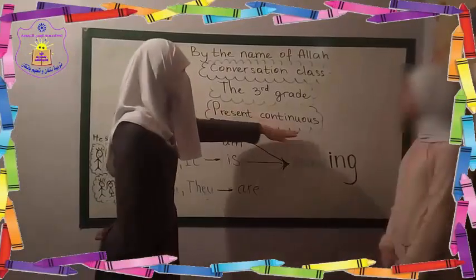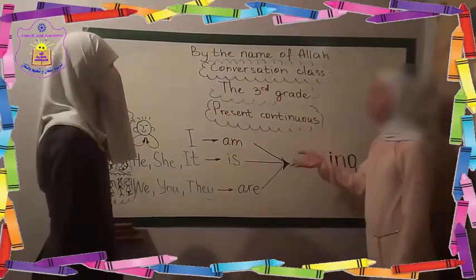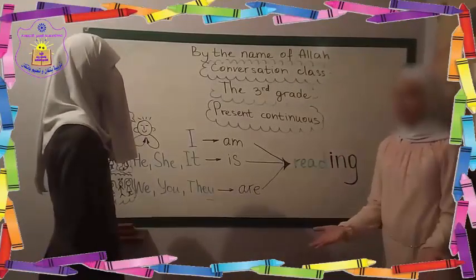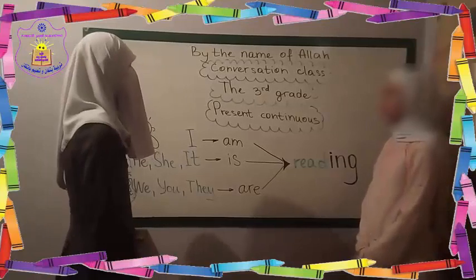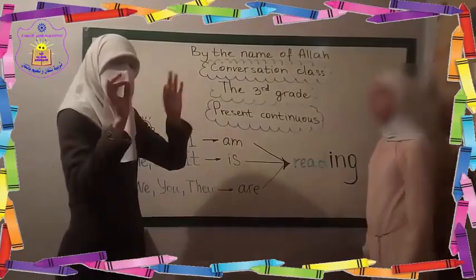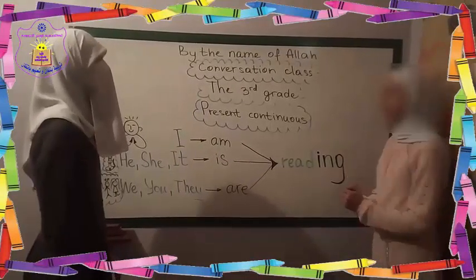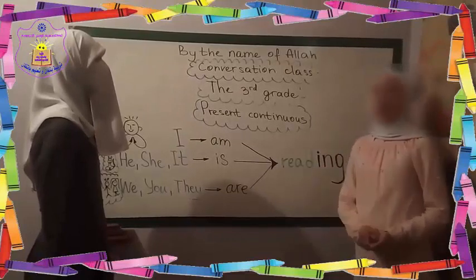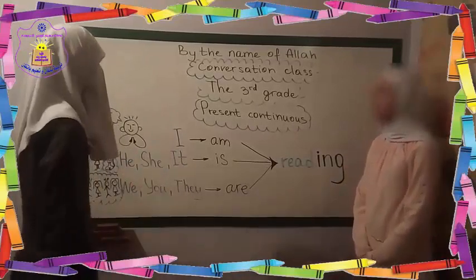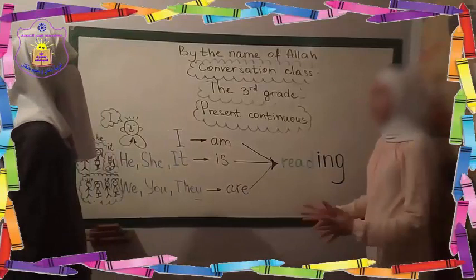Our today's topic is present continuous. What does it mean, Noor? اليوم رح ناخذ قاعدة المضارع المستمر. When do we use it? أين نستخدم هذه القاعدة؟ When we speak about something which takes place at the moment of speaking — now, at the moment. نحن نستخدم هذه القاعدة عند الكلام عن شيء يحدث الآن أو في الوقت الحالي. Now let's take the rule. القاعدة — we will take the rule.